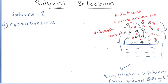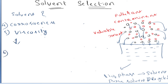The fifth criteria to be followed is viscosity of the liquid or solvent. The viscosity of the liquid should be low, because if the viscosity is low, you require only less power for pumping. Pumping energy can be reduced and heat generation can be minimized. Because of these benefits, your solvent should have low viscosity. High viscosity means you require more power to pump the liquid into the column.